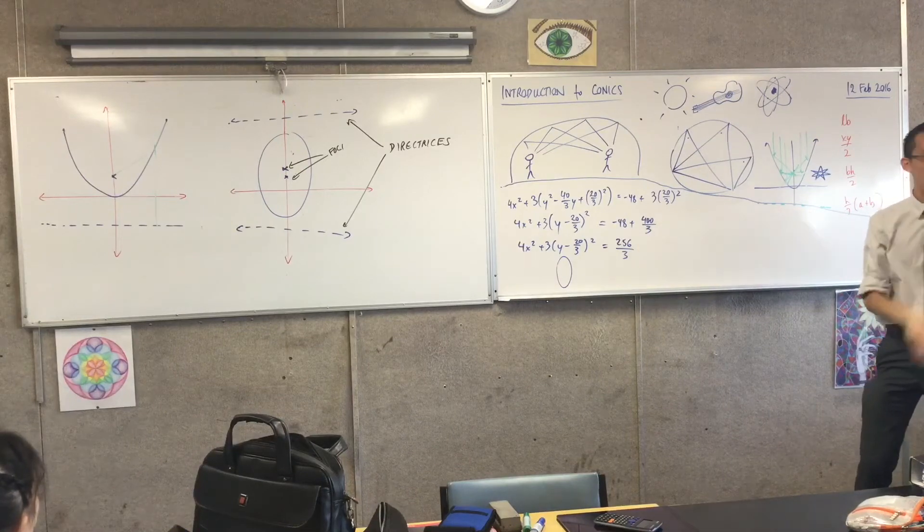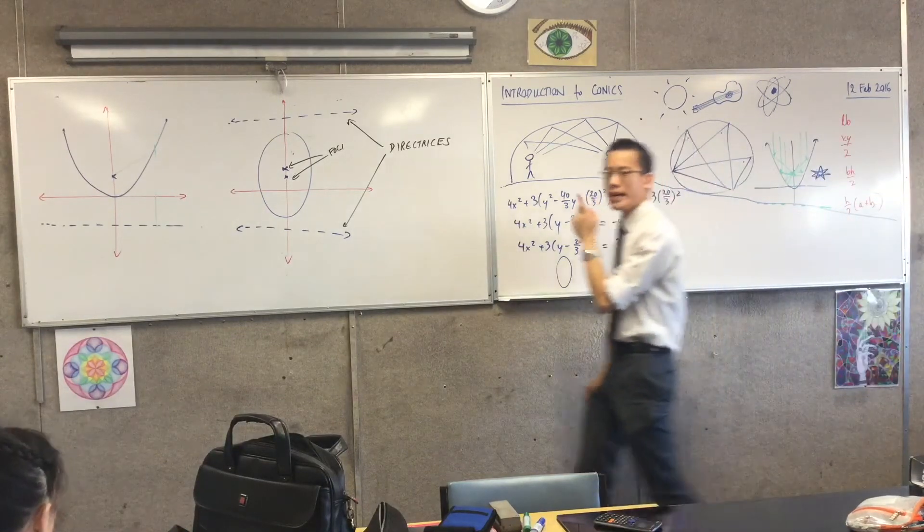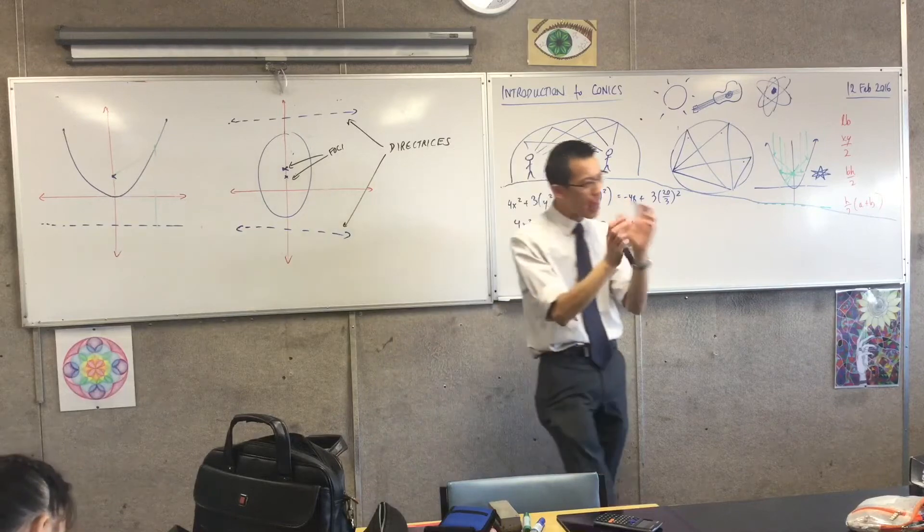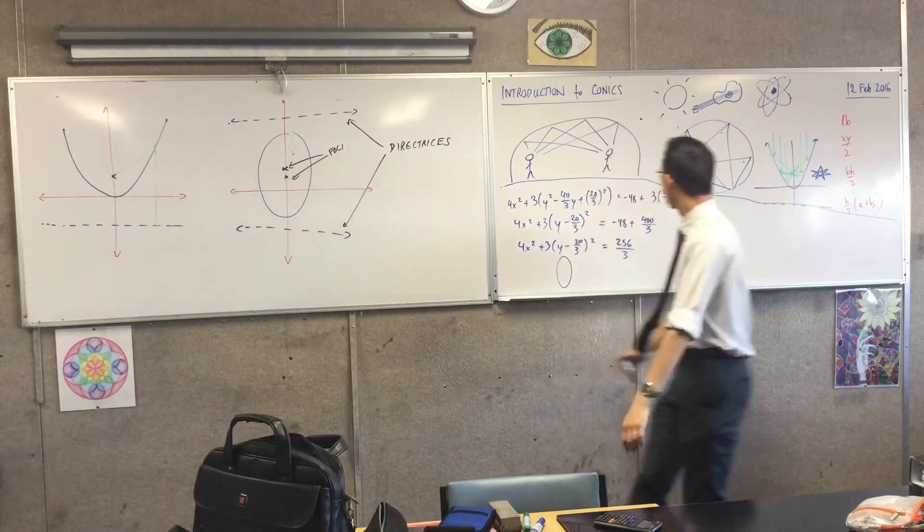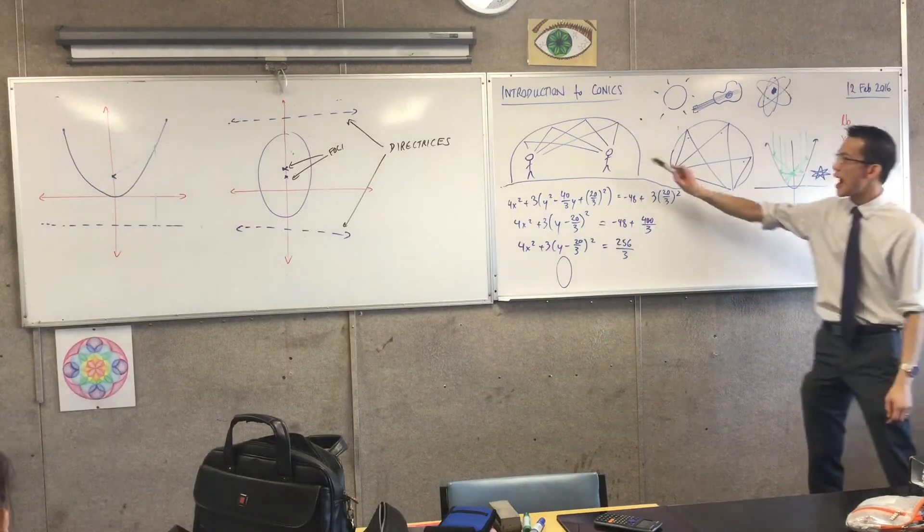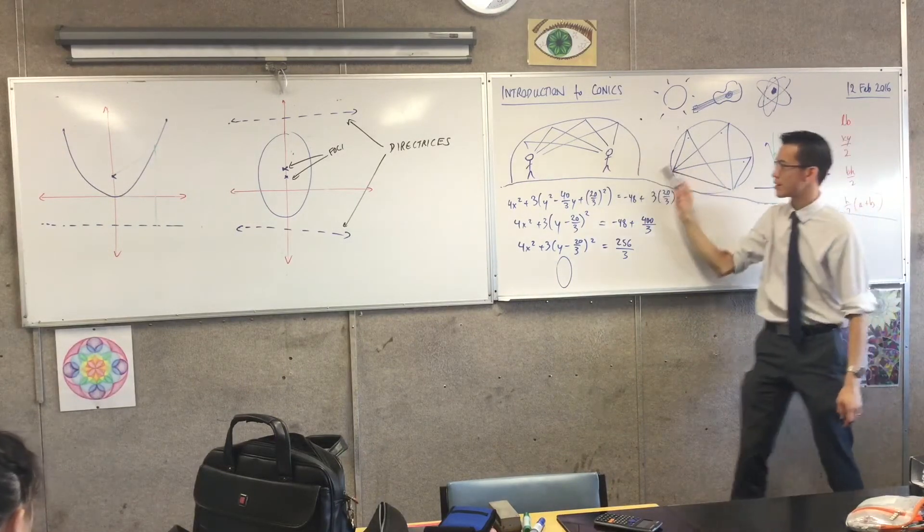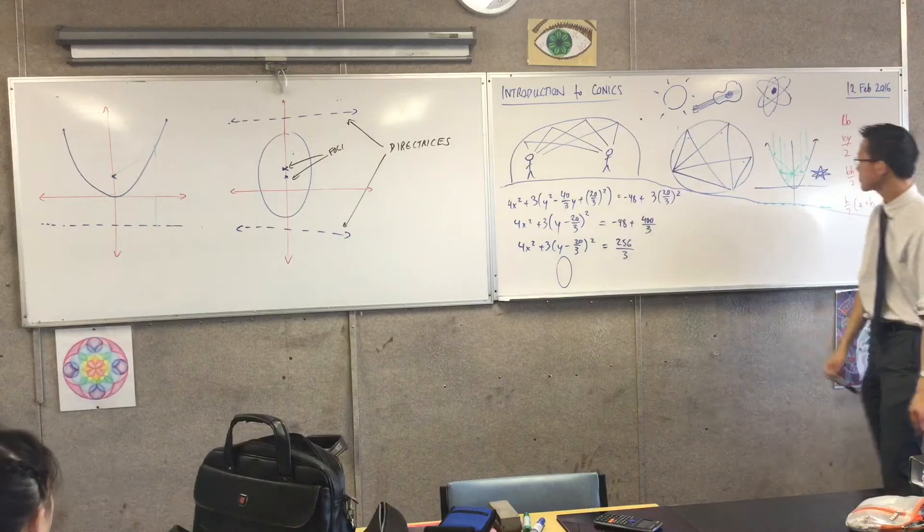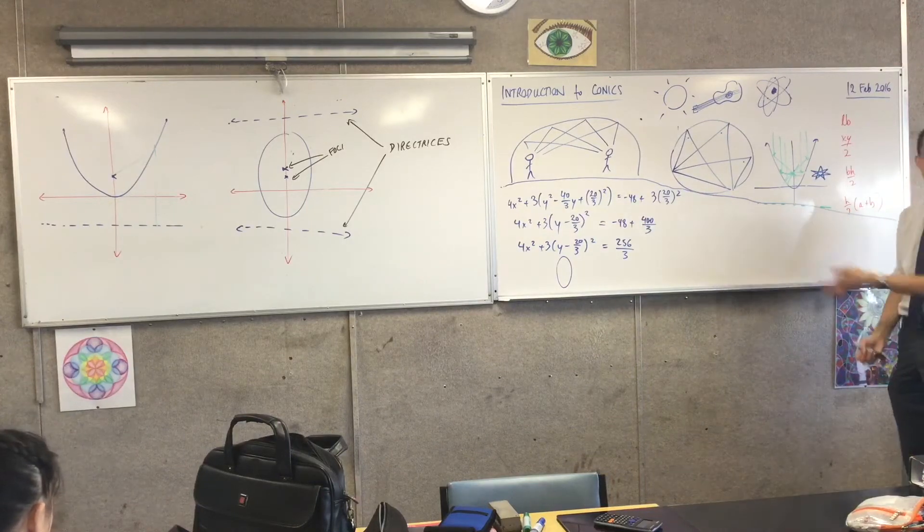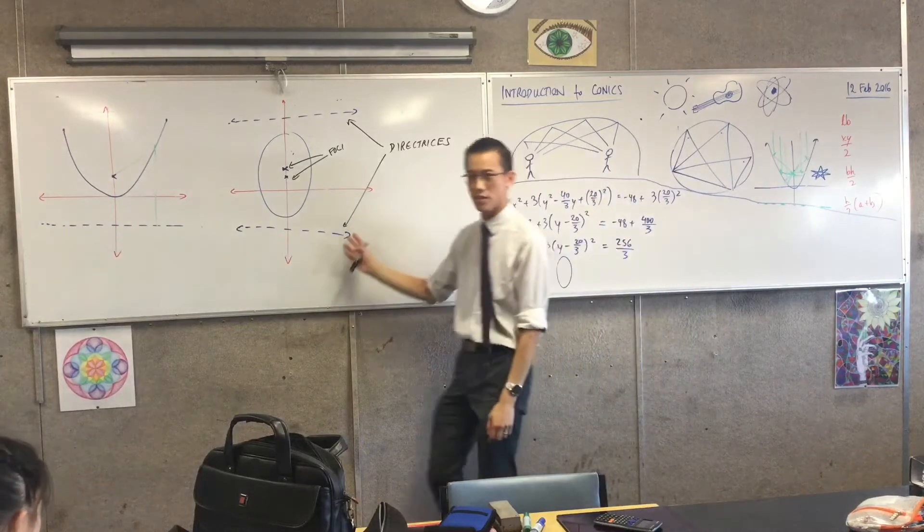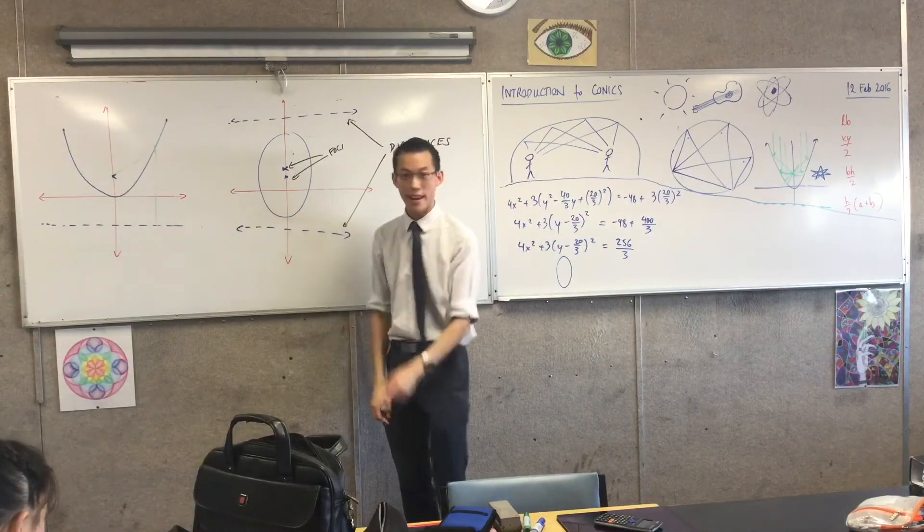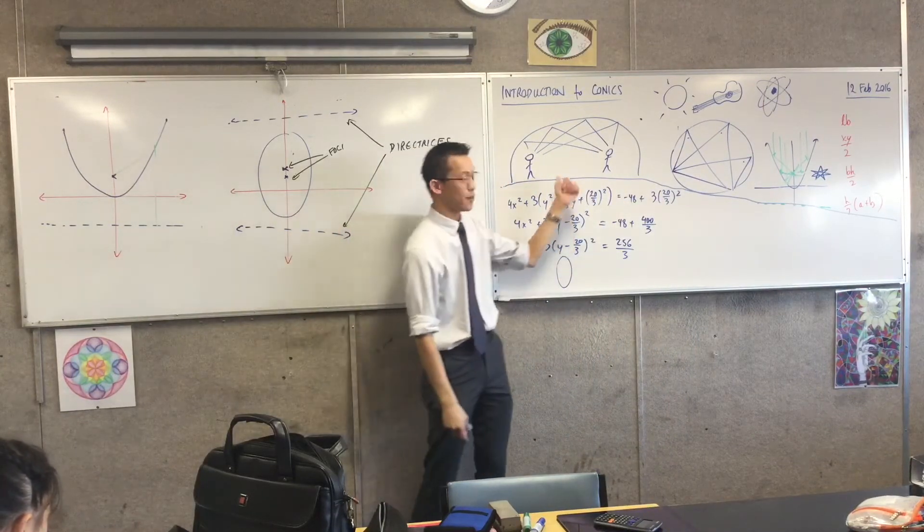So what have we just established so far? We can now see through just a slight little modification, and we're not all the way there yet. This is just the beginning. We can now see how this guy, the ellipse, or at least half of the ellipse, and this guy, the parabola, they are deeply connected algebraically. Even though the equations are quite different.